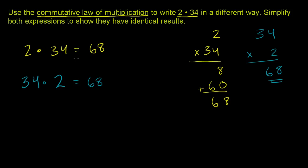So it doesn't matter whether you have two groups of 34 or 34 groups of 2. In either case, you're going to have 68.